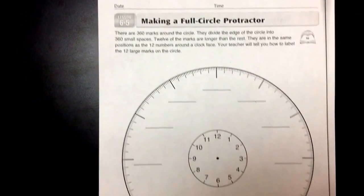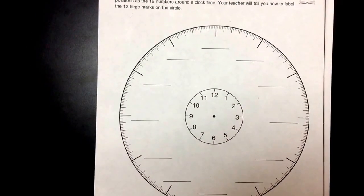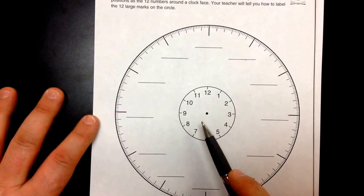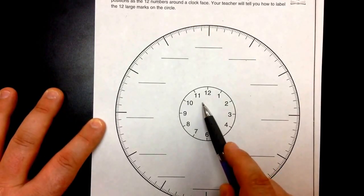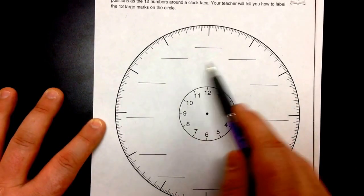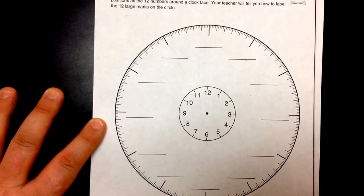So we see here on page 152 that we have a clock face in the middle that goes from 12 to 1 and back around to 12. And we have this other part of a full circle protractor which is used to measure angles.